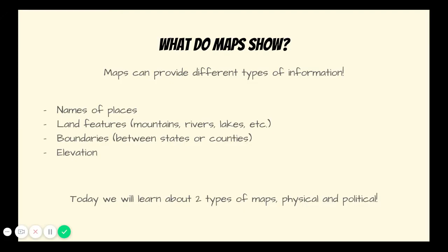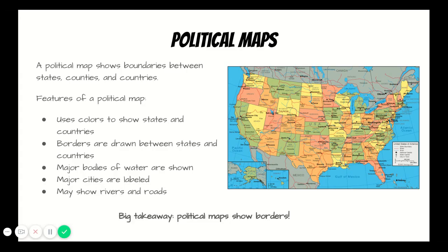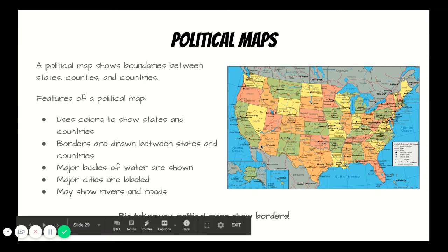Today, we will learn about two different types of maps: physical and political. A political map shows boundaries between states, counties, and countries. This is a political map of the United States. You can see that the boundaries between each of the states are shown. We can also see the boundary to the north between the United States and Canada, and the boundary to the south between the United States and Mexico.